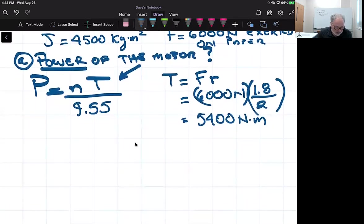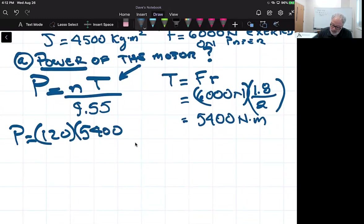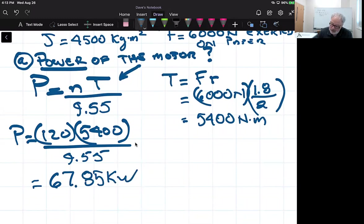So now we have everything we need. I know the power in this situation is equal to 120 RPMs times a torque of 5,400 newton meters divided by this constant 9.55 that we talked about earlier. And then if we crunch this through our calculator, we come up with 67.85 kilowatts. Then we could do that conversion that we know of 746 watts equals one horsepower. And if we go through that calculation for this problem, we would get approximately 91 horsepower is the power of the motor turning at 120 RPMs.